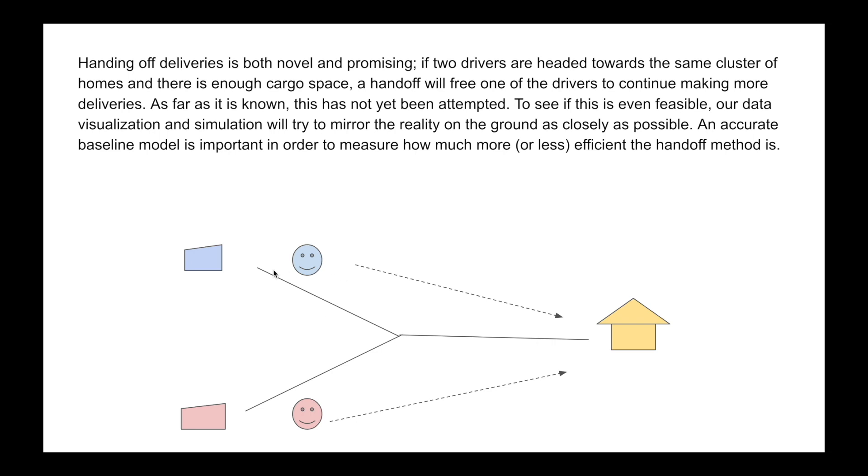This is an idealized situation in which a handoff would save time and money. For example, there is a blue driver coming in from the blue restaurant headed towards this apartment complex with the red driver coming from the red restaurant headed towards the same complex. Instead of them both going to the same complex, they can meet in the middle, do the handoff. One of them goes and delivers both while the other one is free to do new orders.